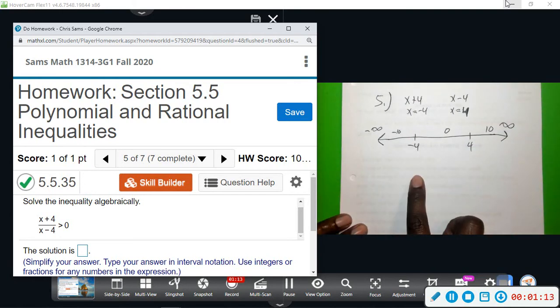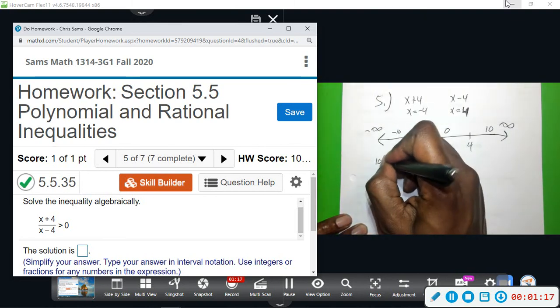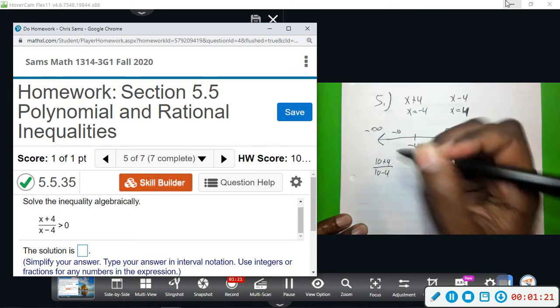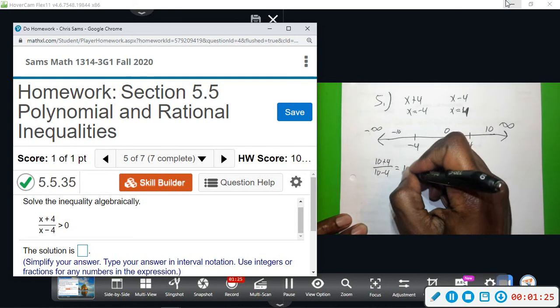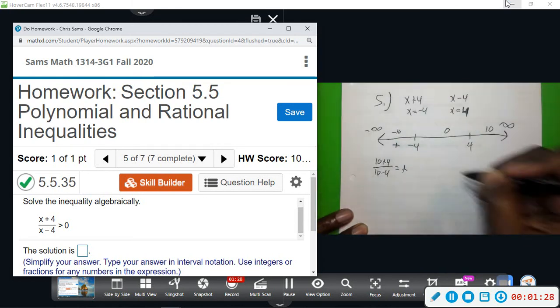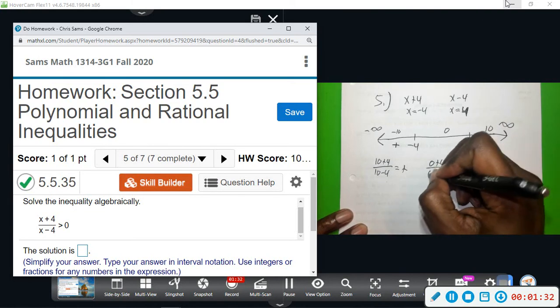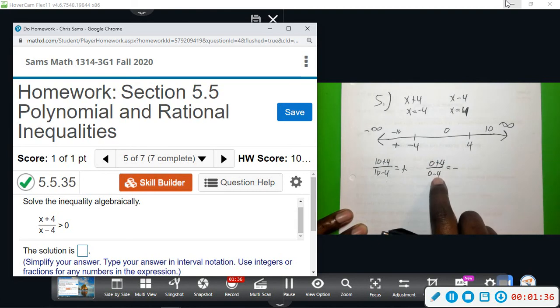With this one, I will have 10 plus 4 over 10 minus 4. When I do this, positive positive, so the overall answer is positive. So this section here is positive. I'll plug in a zero: I have zero plus 4 and zero minus 4. This will give me a positive divided by negative, which gives me a negative here.